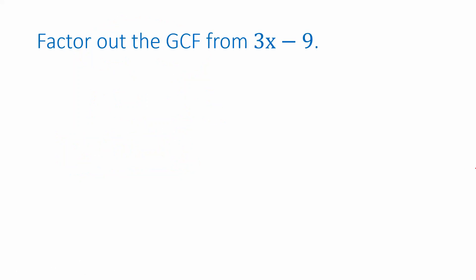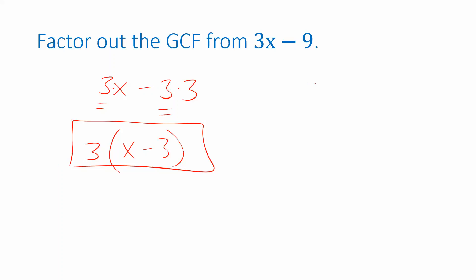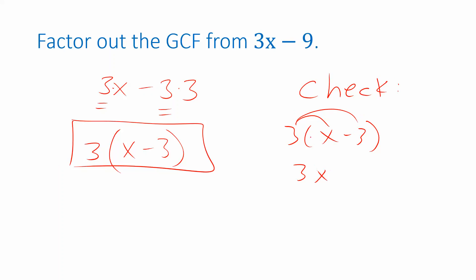So let's try another one. Factor out the greatest common factor from 3x minus 9. Let's write things in terms of their prime factors. 3 is already prime, and the variable x is written as x. But 9 is not prime — 9 can be written as 3 times 3. Now, what do they have in common? They have a 3 in common, so I can pull that out. They don't have anything else in common, so I leave what's left after pulling out that 3. This is the factored form. You can check by expanding: 3 times the quantity x minus 3. When I expand it, I get 3x minus 9, which is what I wanted.